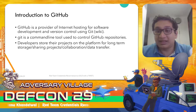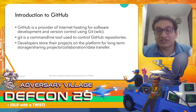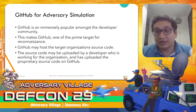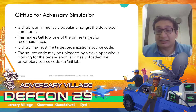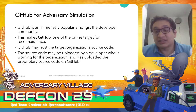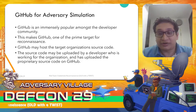What is GitHub? As per Wikipedia, it is a provider of internet hosting for software development and version control using a command-line tool called Git. Developers use GitHub for storage, sharing projects, collaboration, data transfer, etc. From an adversary's perspective, GitHub is a gold mine — its mass usage makes it a prime target, and developers often unknowingly commit proprietary source code or credentials to GitHub repositories.